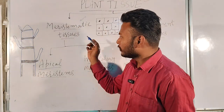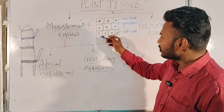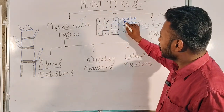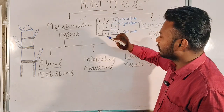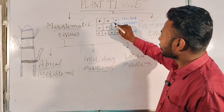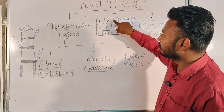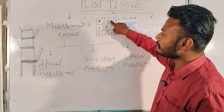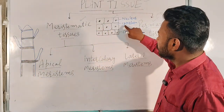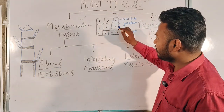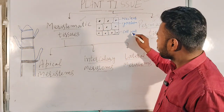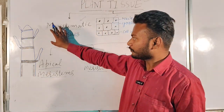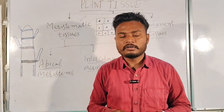Now, what is meristematic tissue? In meristematic cells, the nucleus is located at the center — you can see all nuclei are present at the center. The intermolecular distance is negligible, meaning very little space is found between these meristematic cells. The cytoplasm of meristematic tissue is very dense, and the cell walls are very closely set.